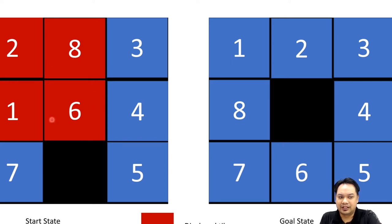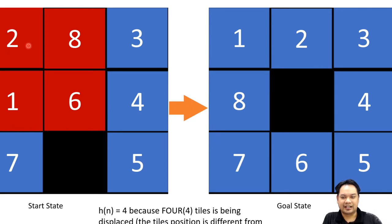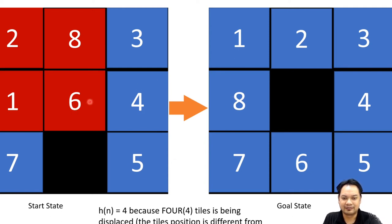These tiles are not sitting in their correct positions. The goal state is: 1, 2, 3, 8, blank, 4, 7, 6, 5. So 1, 2 are not at their correct positions; 3 is at its correct position. 8 and 6 also are not placed at their actual locations — the red color denotes displaced tiles. The goal is to turn the initial state into the goal state with the minimum number of movements, because it's the goal to find the lowest cost.